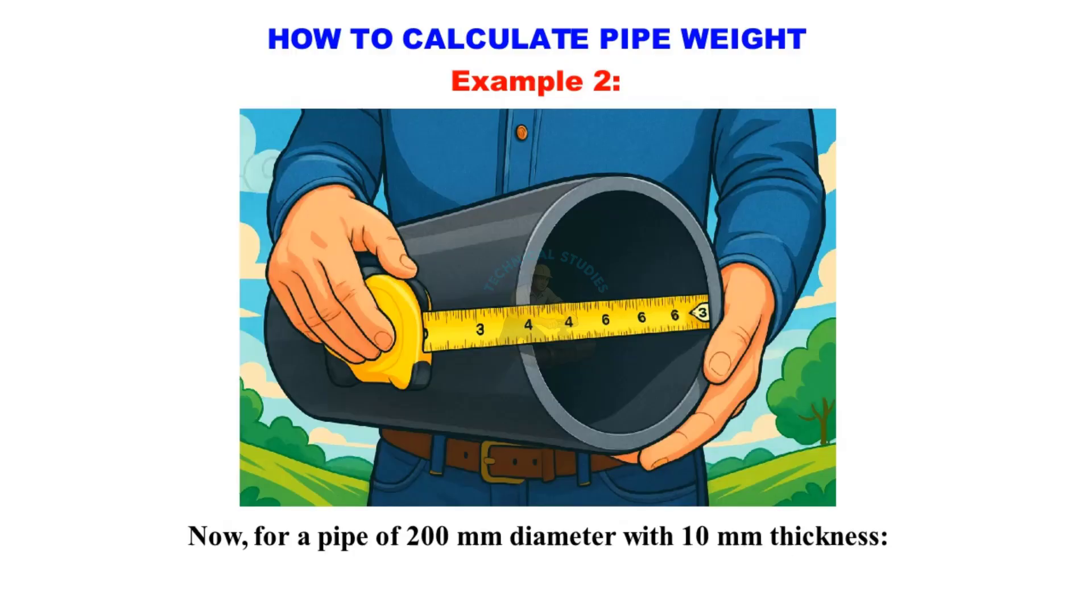For a pipe of 200 millimeters diameter with 10 millimeters thickness, weight per meter equals 0.02466 times 200 minus 10 times 10 is equal to 46.8 kilogram per meter.